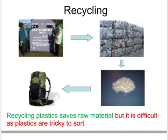Far better if we can recycle our plastics. Here we see a collecting bin for plastic bottles. These get baled up and crushed to make very small granules which can then be melted down and reformed to make, for example, camping gear. It's a great idea to recycle plastic because it saves raw material, meaning less crude oil has to be used to make new plastic. But it's very difficult to sort each individual plastic into its own type of polymer.